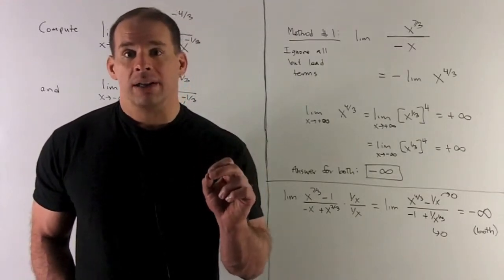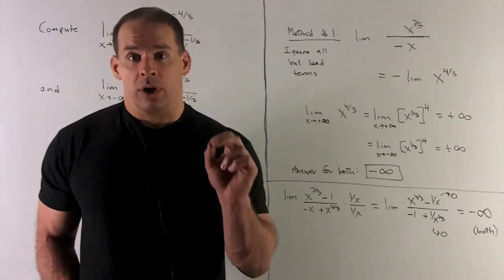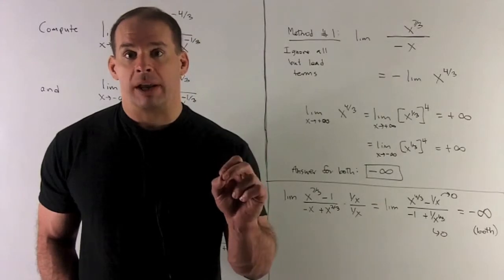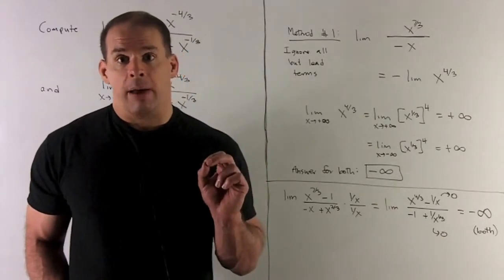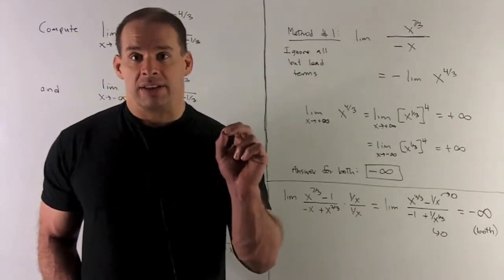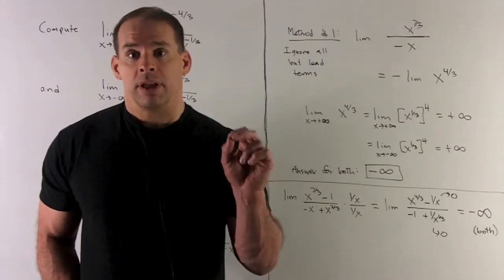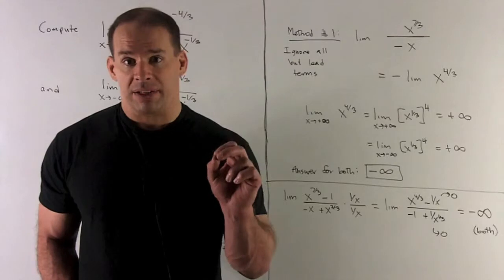As we go out to minus infinity in x, we know x to the 1 third, when I put a negative number in, a negative number comes out. So as I take the limit as x goes to minus infinity, that's also going to go to minus infinity.